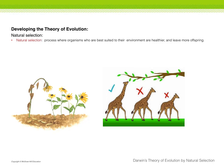Natural selection is a process where organisms who are best suited to their environment are healthier and leave more offspring. Those individuals that are better suited for that environment eat more, look better, and leave more babies.